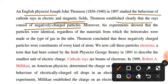The English physicist J.J. Thomson studied the behavior of cathode rays in electric and magnetic fields. He showed clearly that the rays consist of negatively charged particles. He proved these were negatively charged particles.